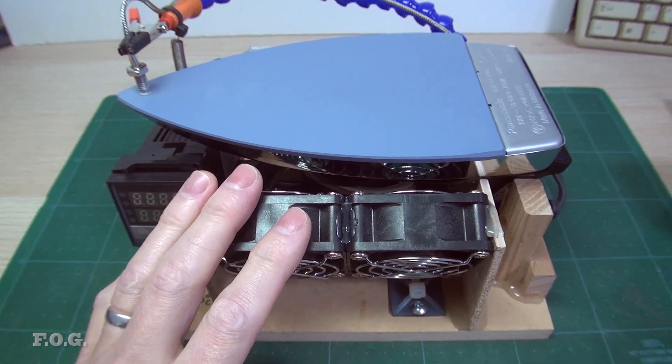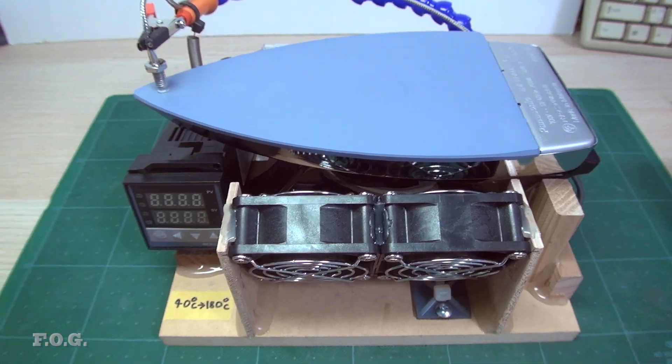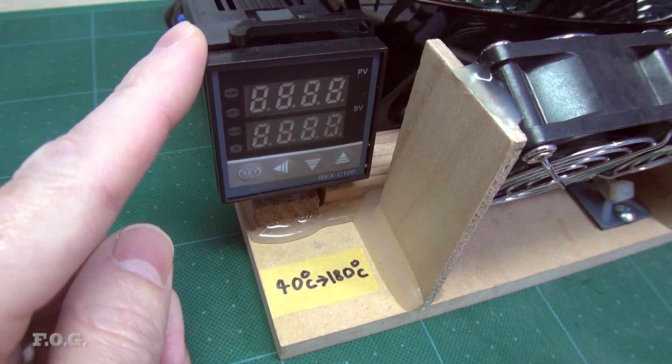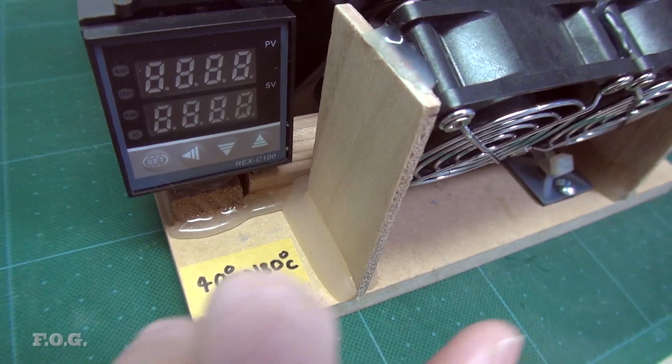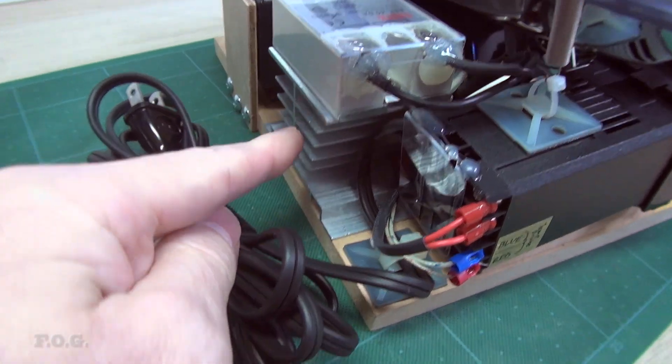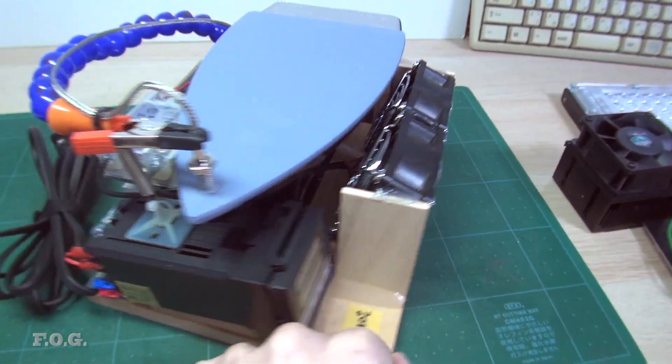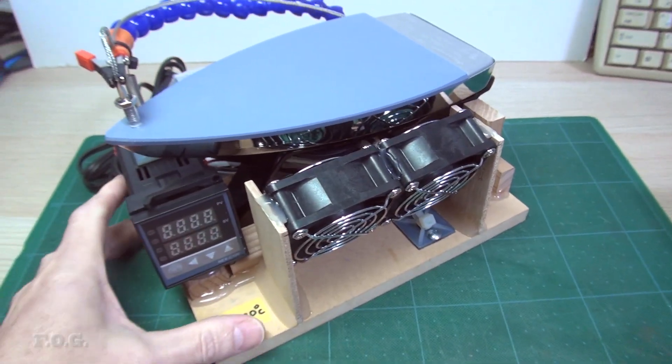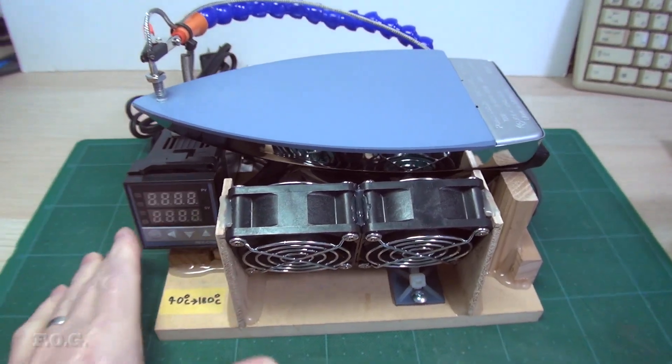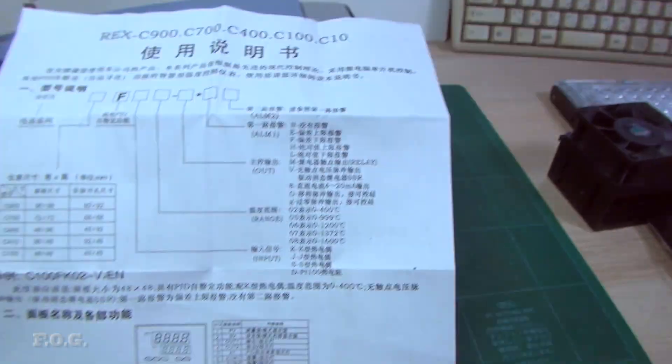I wanted to add a controller for detailed temperature control. On AliExpress I found a controller kit which included this little controller, an REX C100, and it also had a solid state relay included with a heat sink and a thermocouple or probe. It's a PID controller capable of doing between zero and 400 degrees.